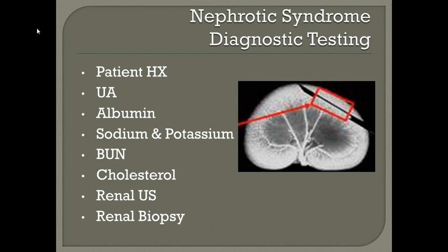For diagnostic testing in nephrotic syndrome, we take a patient history to determine prior AGN or CGN. Urinalysis checks for protein and blood in the urine. Albumin levels determine if hypoalbuminemia is present. Sodium and potassium are assessed — serum sodium will be low while potassium may be elevated. BUN and creatinine will be elevated. Cholesterol will be elevated. A renal ultrasound and biopsy are usually done together to assess cellular function of the organ.